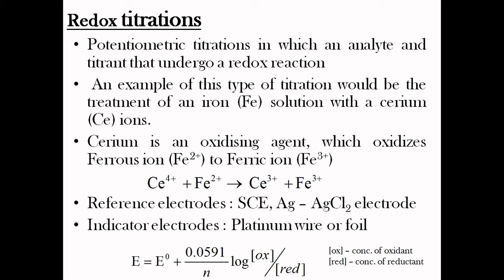By using this type of reaction, we can find the concentration of an unknown solution using an electrochemical cell. We constitute an electrochemical cell using a reference electrode and an indicator electrode, and then find the endpoint or unknown concentration. This type of titration is known as redox potentiometric titration. The basic principle is that E-cell equals E⁰ plus 0.0591 divided by n, multiplied by the log of concentration of oxidant by concentration of reductant, where n is the number of electrons.